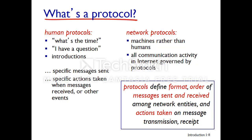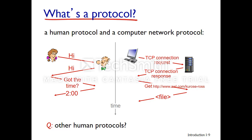On this slide we show an example of a human protocol and a computer network protocol side by side. Say Alice is trying to ask Bob for the time. Alice will say 'hi' to Bob. Bob says 'hi' in response. Then Alice says 'do you have the time?' And then Bob can say 'it's two o'clock.' That's the human protocol example.